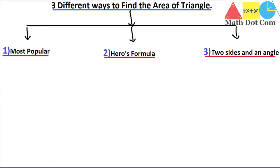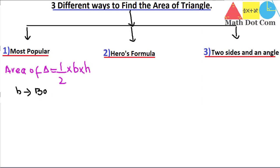Today we are going to learn the three different ways to find the area of a triangle. The first and most popular is: area of triangle equals 1/2 multiplied by base multiplied by height. B is for the base of the triangle and H is for the height. If you are given these two parameters, you can easily find the area of the triangle.